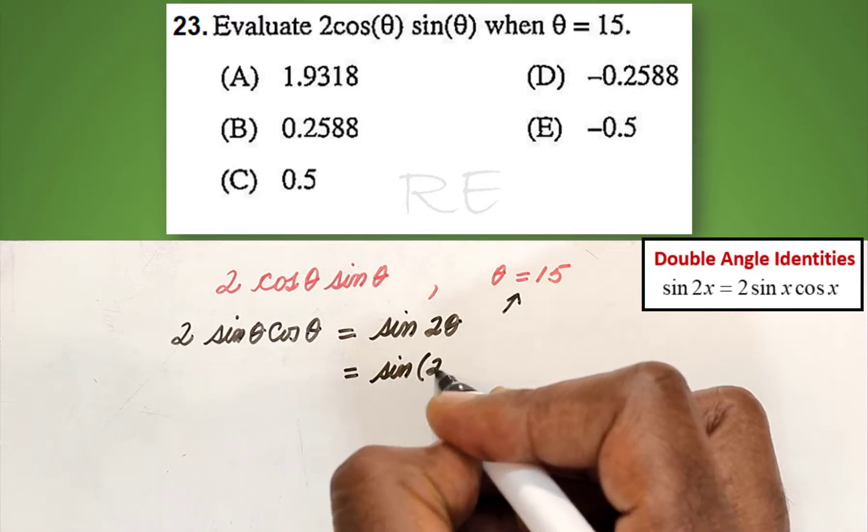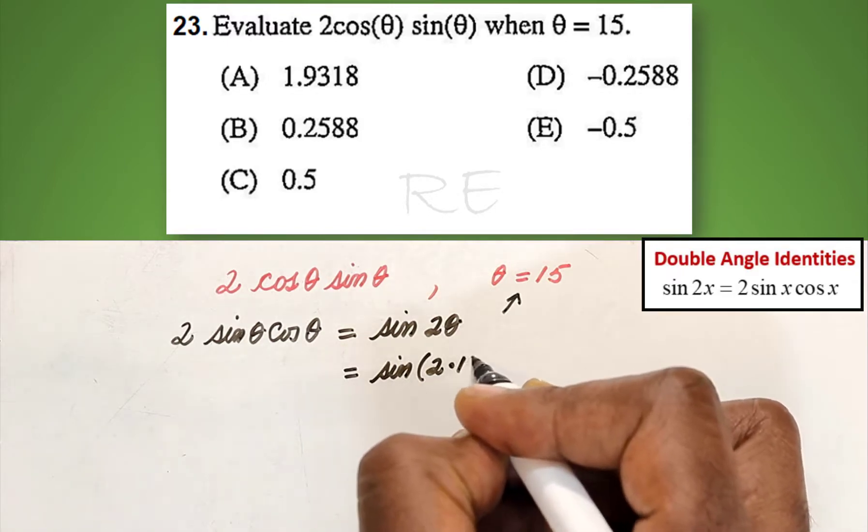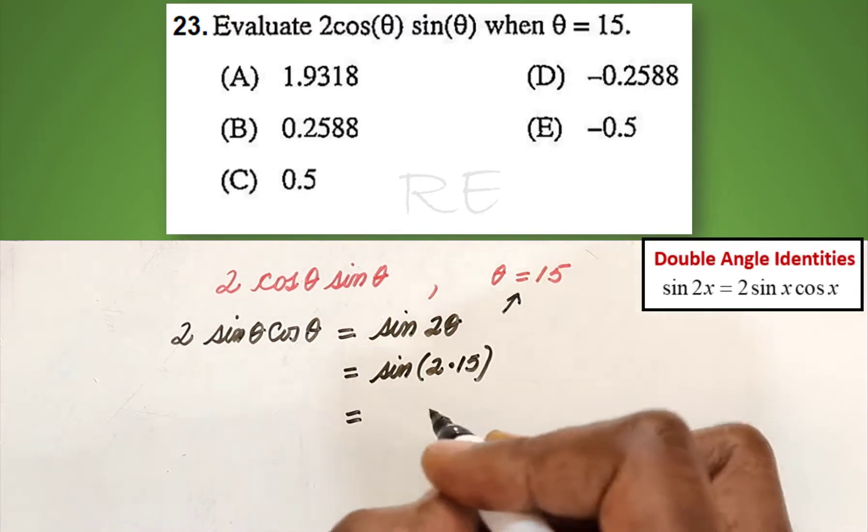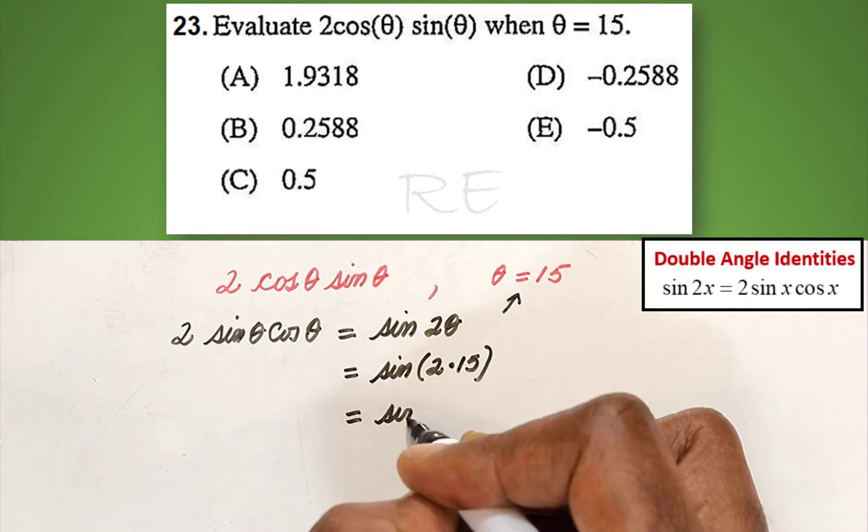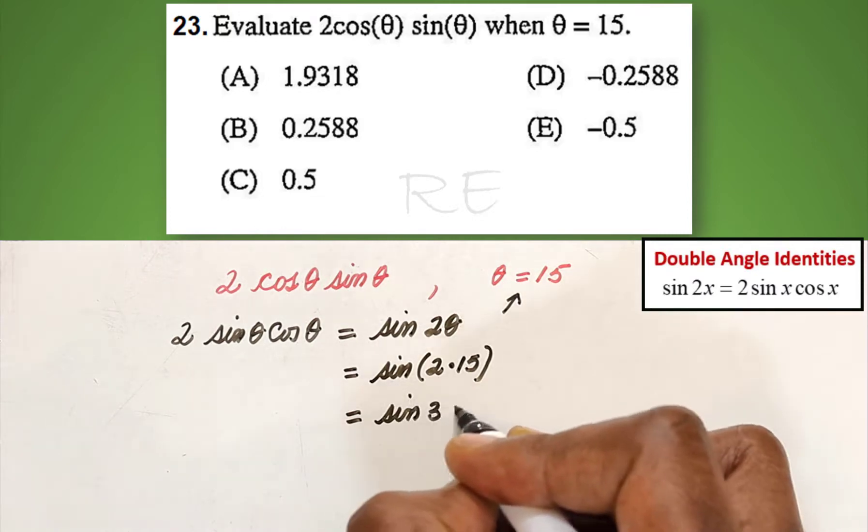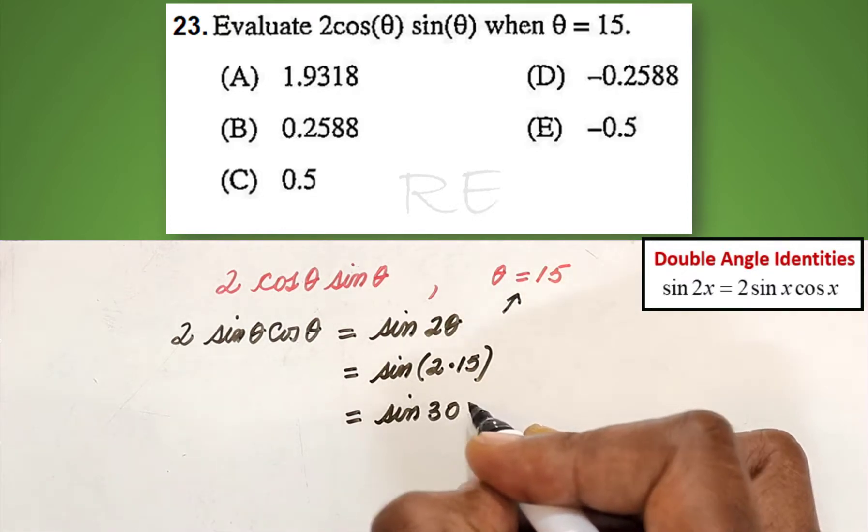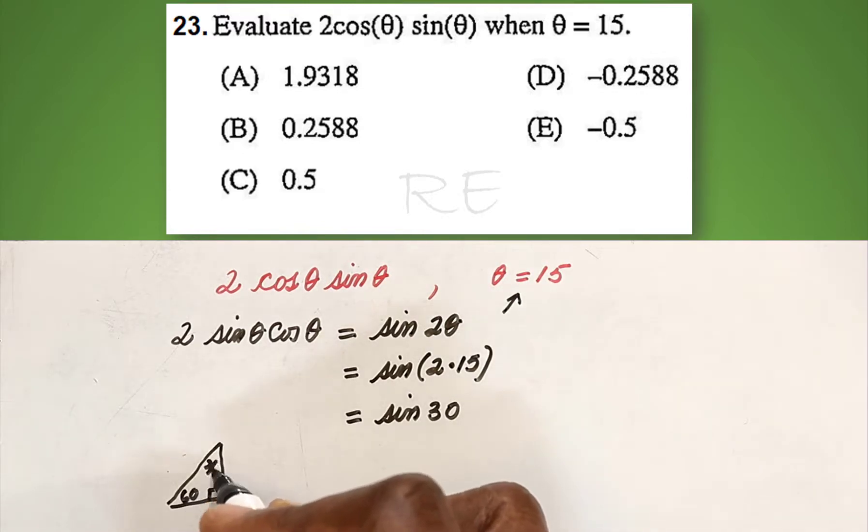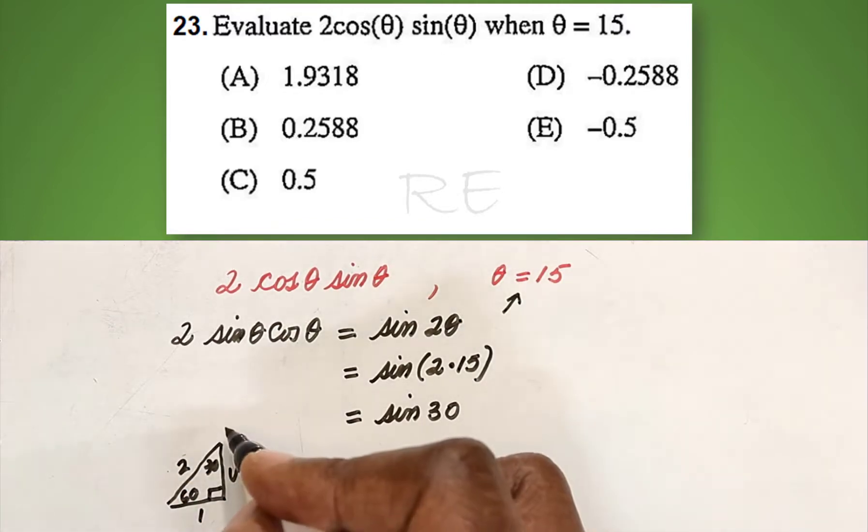Sine 2 theta is equal to sine 2 times 15, which is sine 30. Sine 30 degrees. Now, from the reference triangle: 60, 30, 1, 2, square root of three.